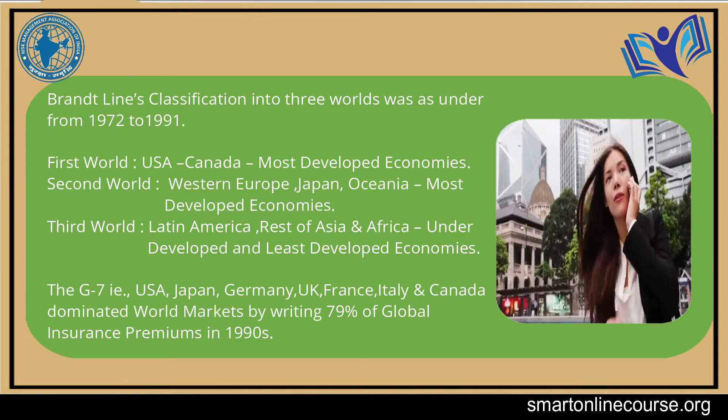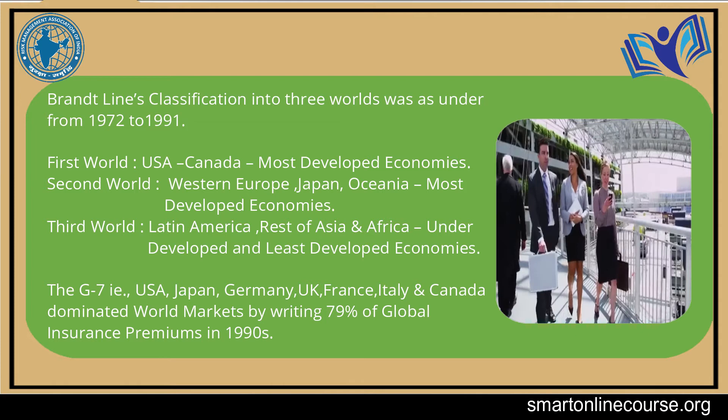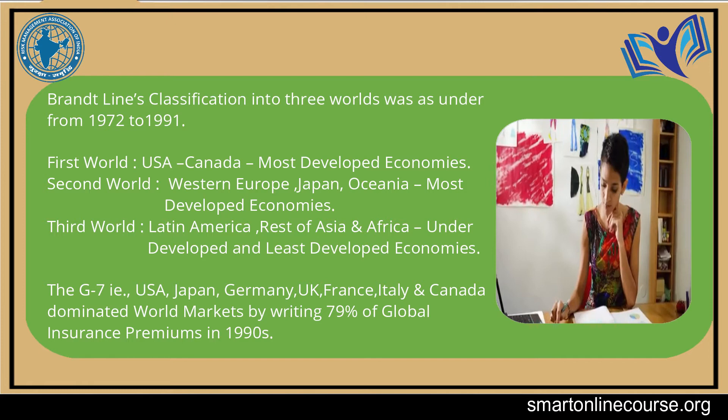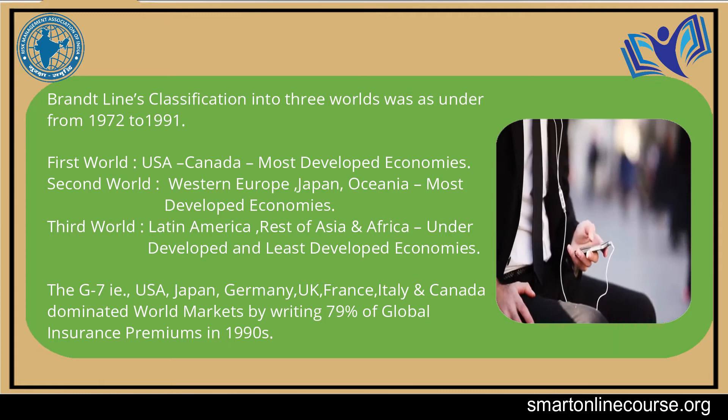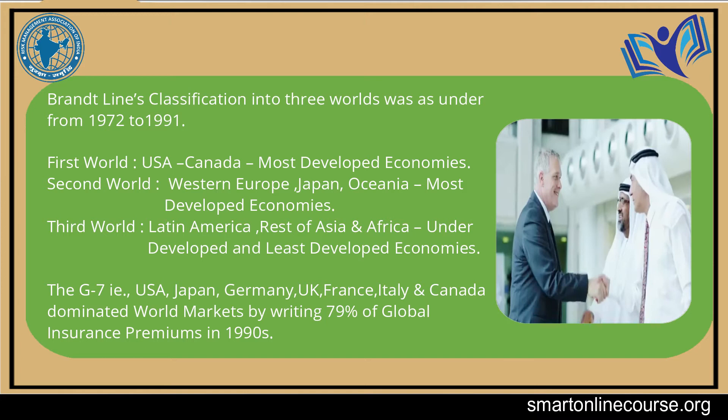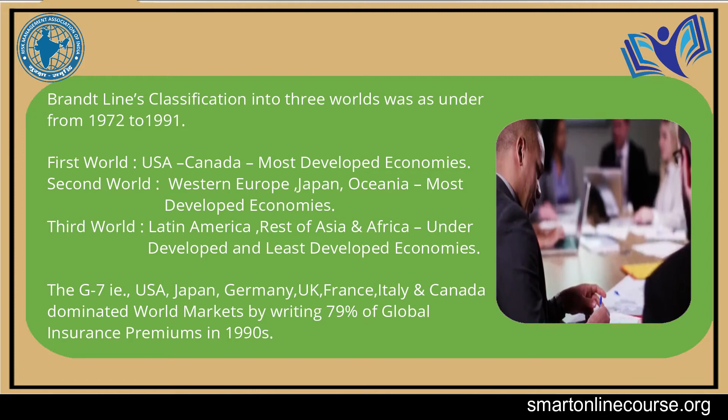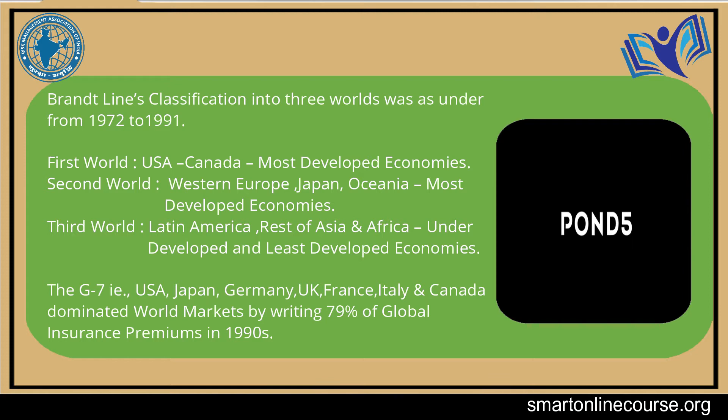By 1972, between 1972 and 1991, President Willy Brandt of West Germany had classified world economies into three sections: First World — USA, Canada — most developed economies; Second World — Western Europe, Japan, Oceania — also most developed economies; and Third World — consisting of Latin America, rest of Asia and Africa — underdeveloped, least developed, and some emerging economies.